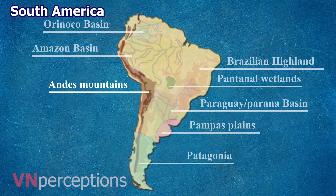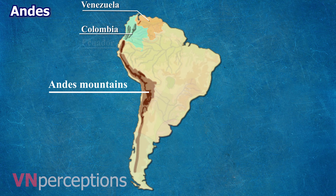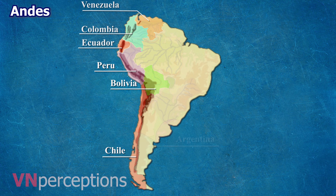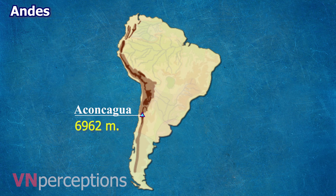The Andes, or the Andean Mountains, are the longest continental mountain range in the world, with a length of 7,242 kilometers. The range spans the full length of the western side of South America, passing through seven countries: Venezuela, Colombia, Ecuador, Peru, Bolivia, Chile, and Argentina. The Andes are split into several ranges separated by intermediate depressions. The highest peak in the Andes is Aconcagua, which stands at 6,962 meters and straddles the Argentina-Chile border.